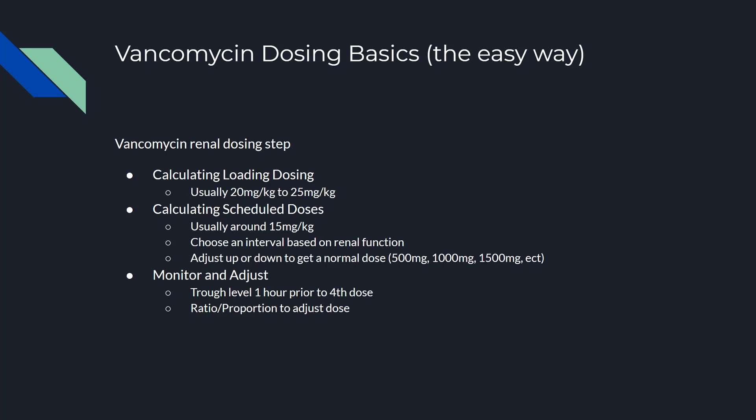The last step is to monitor and adjust the dose. This will be based on trough levels. There's talk of AUC dosing taking over for vancomycin monitoring — it seems complicated — but for right now I would assume most hospitals are still doing troughs. And then once you get the trough, what I use is ratio proportion to obtain my new dose, and I'll explain that later.